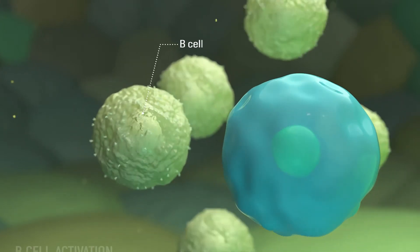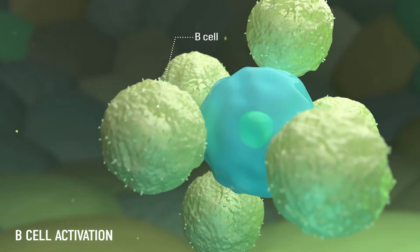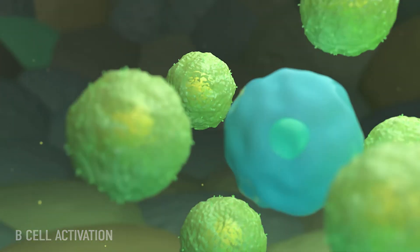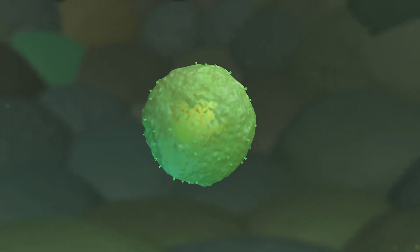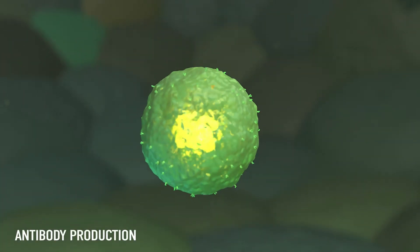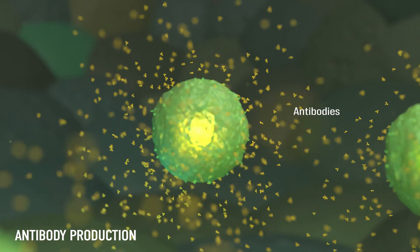The activated helper T-cells approach B-cells and activate them to the antibody factory plasma cell. Plasma cells produce countless antibodies when an infection actually occurs.